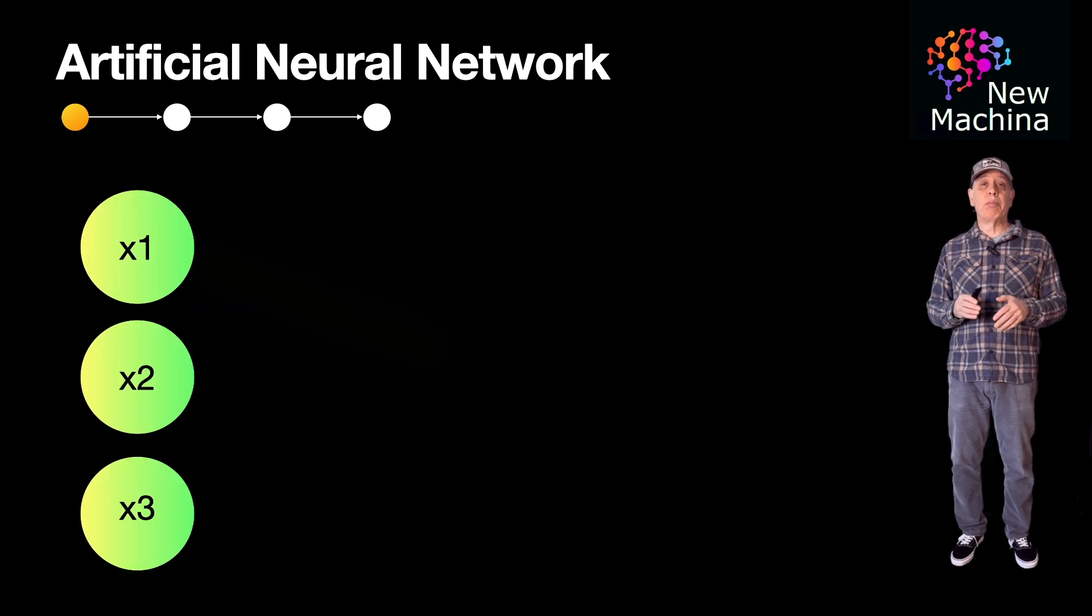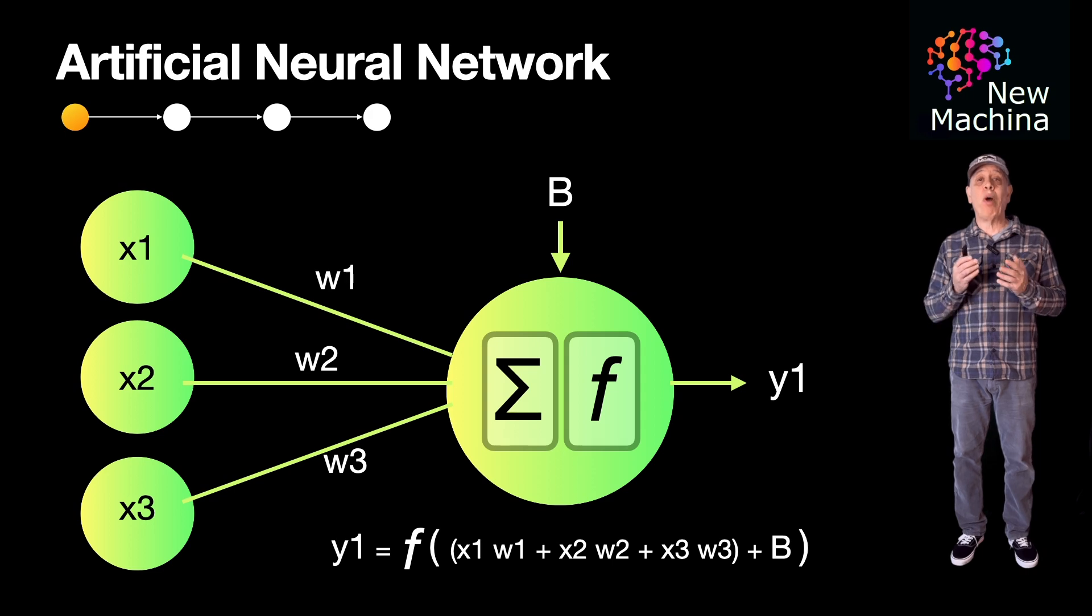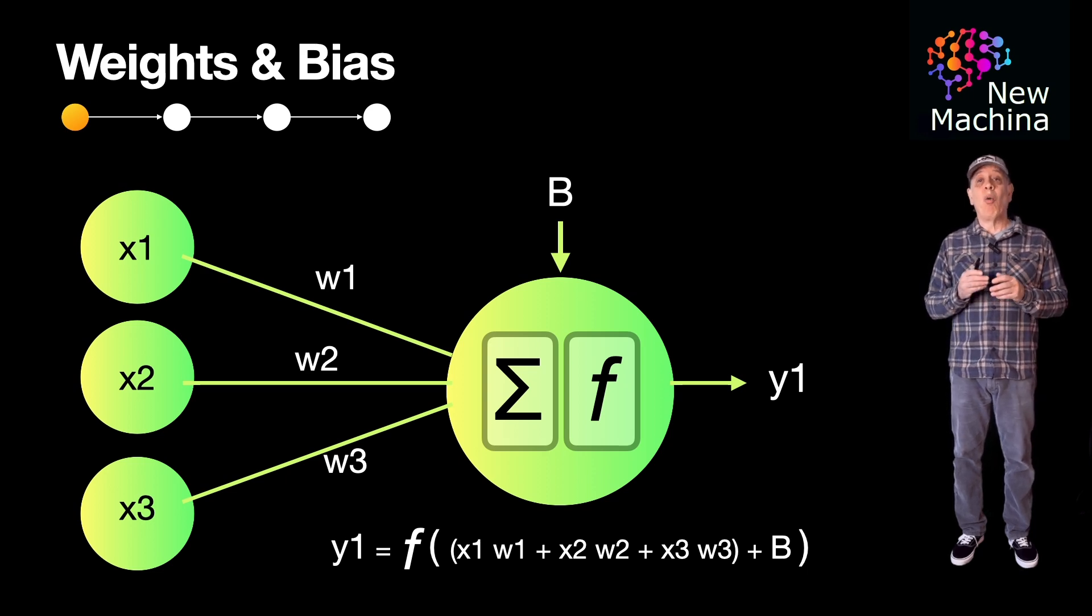If you look closer at a specific neuron, each of the connections between neurons has a weight associated with them. Each weight is independent of the others. The weights determine the importance of the respective input. A small weight suppresses the importance of the input, while a large weight magnifies the importance.